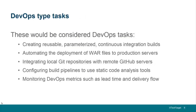A DevOps person is going to be creating parameterized and reusable continuous integration builds. They're going to be automating the deployment of WAR files to artifact repositories like JFrog, or directly to production servers if all static code analysis tests run successfully. Maybe integrating local Git repositories with GitHub servers, configuring build pipelines, monitoring DevOps metrics such as lead time and delivery flow — working with tools and technologies that help bridge the gap between development and operations.